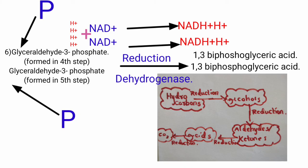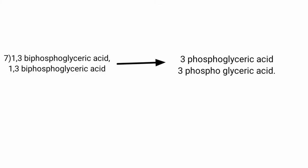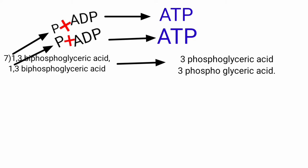In step 7, 2 molecules of 1,3-bisphosphoglyceric acid are converted to 2 molecules of 3-phosphoglyceric acid. The phosphate group on the 1st carbon is removed from each molecule, and those 2 phosphates are accepted by 2 ADP, forming 2 ATP. The enzyme used is phosphoglycerate kinase.